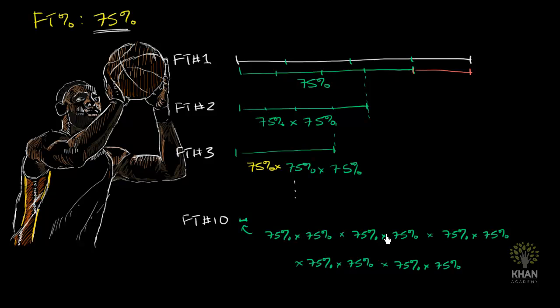75% multiplied together: 1, 2, 3, 4, 5, 6, 7, 8, 9, 10. 75% being repeatedly multiplied 10 times. Now, this would obviously take me forever to do it by hand, and even on a calculator, if I were to punch all of this in, I might make a mistake. But lucky for us, there is a mathematical operator that is essentially repeated multiplication, and that's taking an exponent.